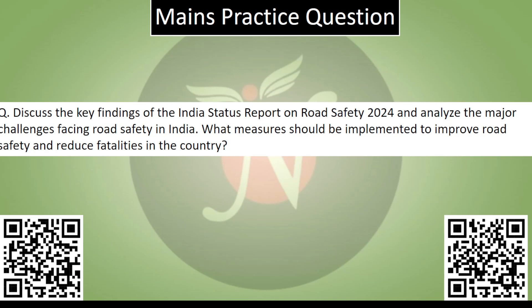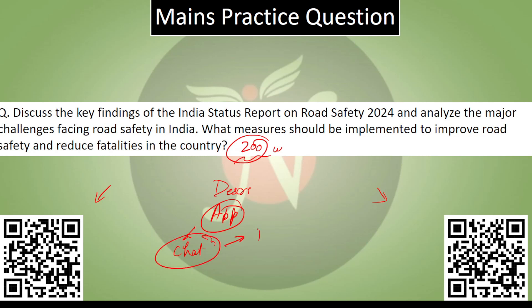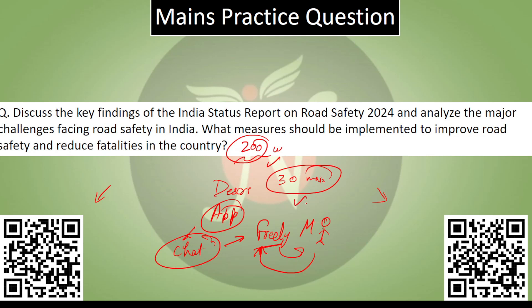Then we have today's mains-specific question: Discuss the key findings of India's Status Report on Road Safety 2024 and analyze the major challenges facing road safety in India. What measures should be implemented to improve road safety and reduce fatalities in the country? Try to write this in around 200 words for practice and send it to us. The app link is in the description. Go to the app, go to the chat section, and you can freely talk to our mentor. This is a free initiative of NLS. We will evaluate your answer and send it back. Answer writing practice is very good if you are preparing for UPSC at home. Thank you, have a nice day, and stay tuned with NLS for better preparation.